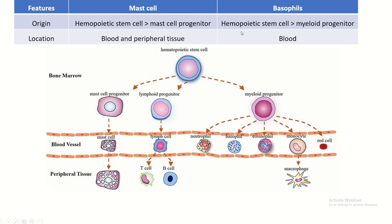Both mast cells and basophils are derived from the hematopoietic stem cell. The mast cell precursor cell is developed from the hematopoietic stem cell and is then converted into a mast cell. The distribution of the mast cell is within the blood vessel, part of the blood, and also found in the peripheral tissue.